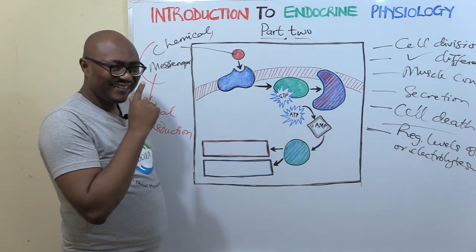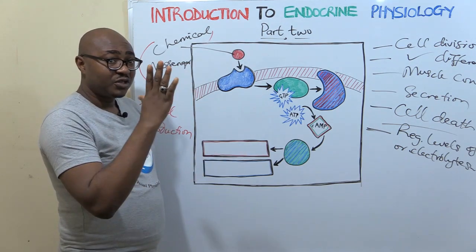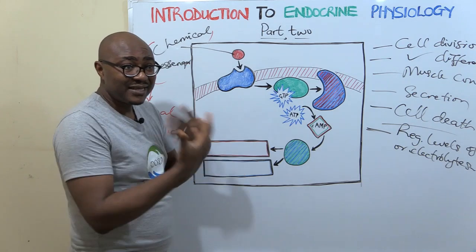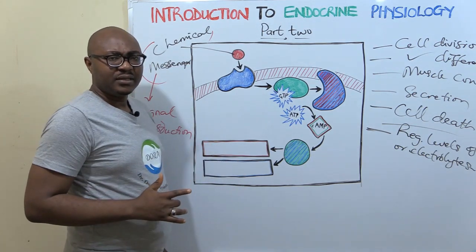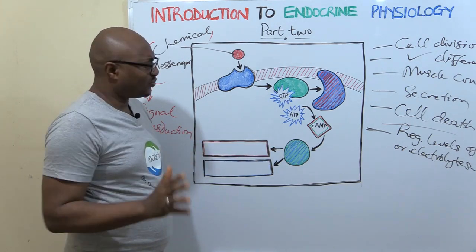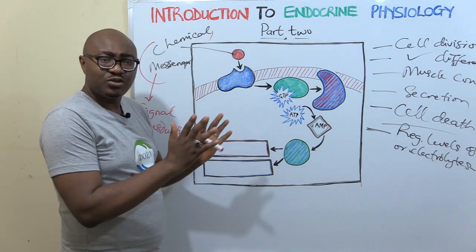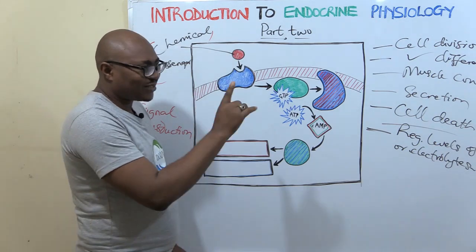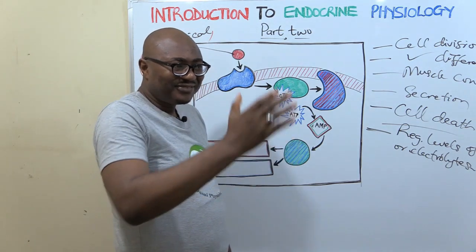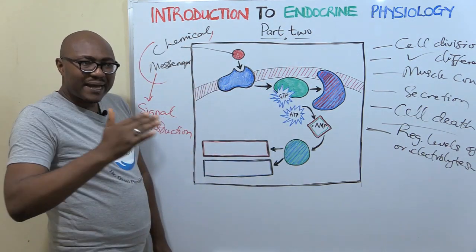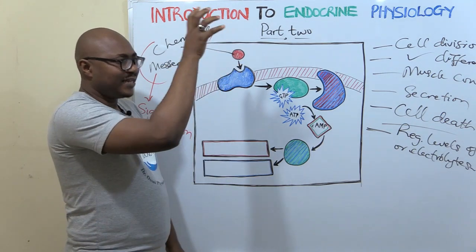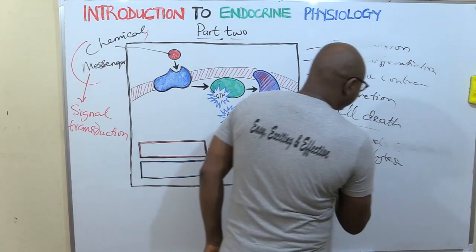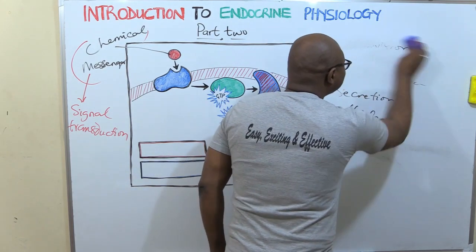A very important principle of physiology is that proteins are the structural and functional molecules of the cell. A lot of these physiological responses are carried out by proteins. You have structural proteins and functional proteins. For example, receptors are proteins themselves, and enzymes that catalyze so many chemical reactions are also proteins. Now let us start with the very first step in the signal transduction pathway: a hormone binding to a receptor. There are two types of receptors.